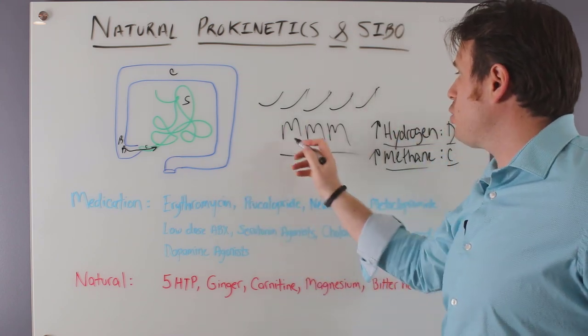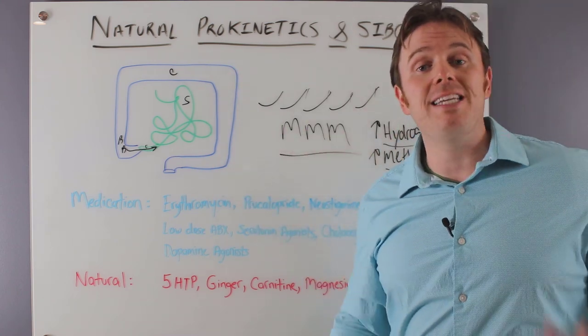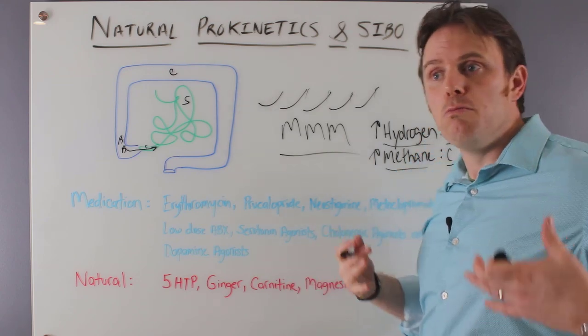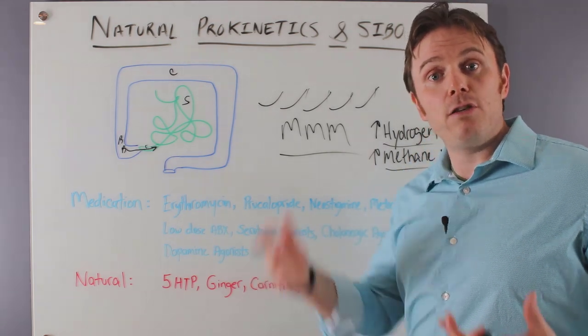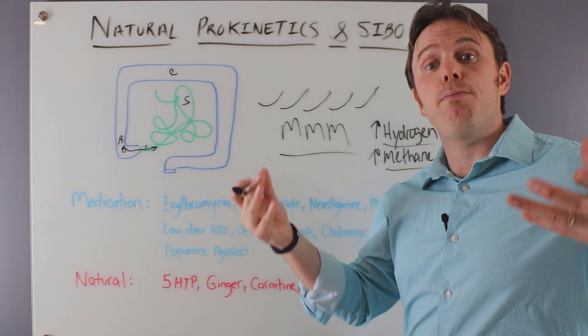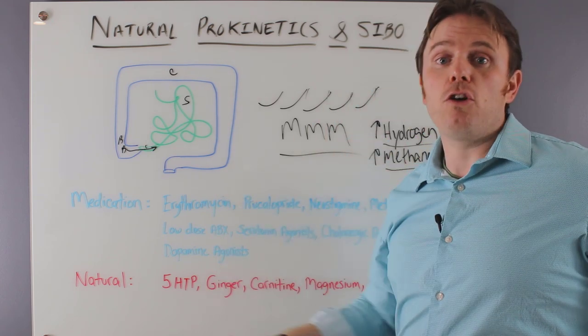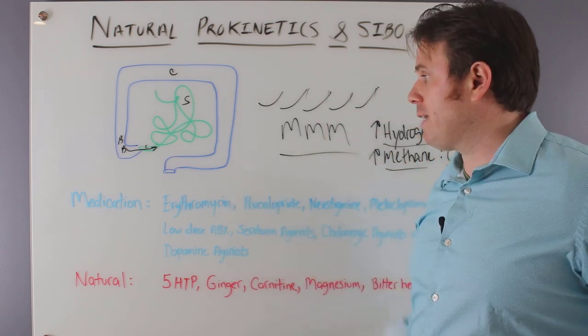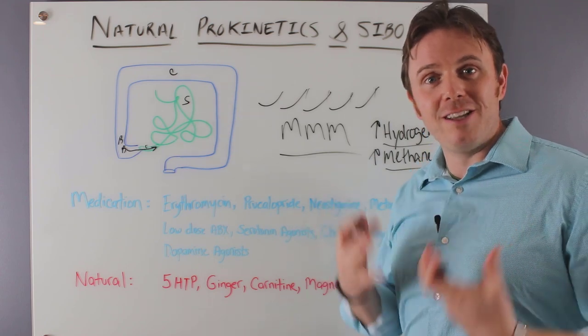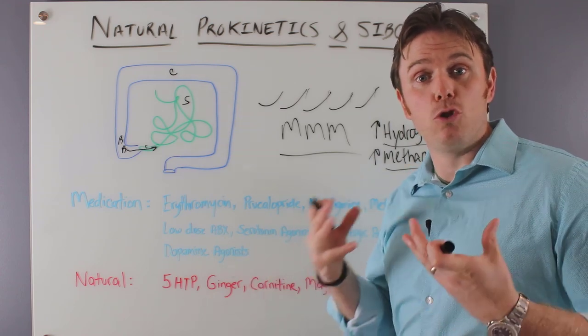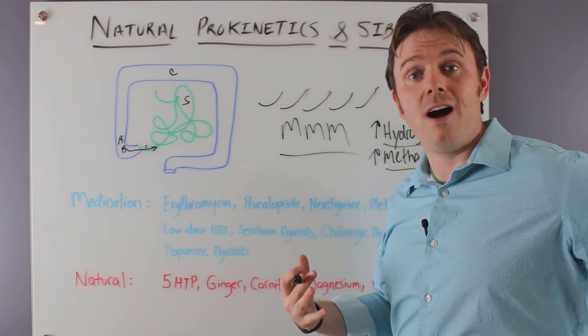And when these wave-like contractions and this migrating motor complex gets interrupted, it's going to make it harder to move food and intestinal waste through the small intestines, absorb it appropriately, and then move it into the colon and out into the rectum, into the toilet, so to speak. And if we have delayed transit time, we could reabsorb toxins, which isn't good. That's auto-intoxication.